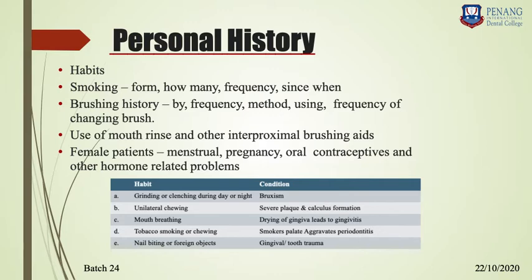If the patient has habits, elicit a detailed history. For example, if the patient is a smoker, identify what type of thing the patient is smoking, how long they have been smoking, how frequently they smoke, and how many cigarettes or cigars per day. All these details help you identify the severity of the habit and the severity of dental problems you can expect.